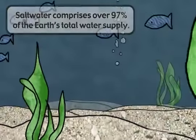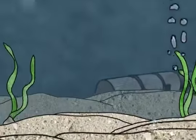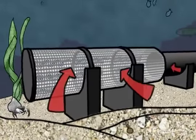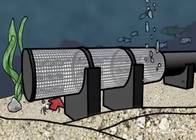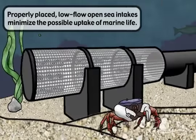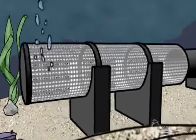Seawater can be economically and reliably converted to potable water through a process known as seawater reverse osmosis. The process starts by extracting water from the ocean using wells located on the shoreline or by using an intake structure located in the open ocean.